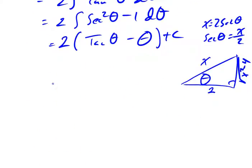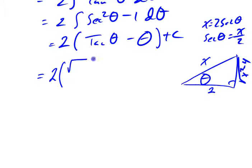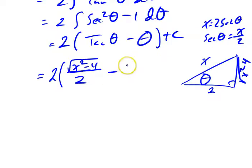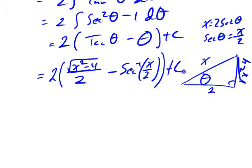So what happens? This is 2 times the tangent of theta. The tangent of theta is the opposite divided by the adjacent side: the square root of x squared minus 4, divided by 2. Minus theta — well, theta is just the inverse secant of x divided by 2. Plus a constant.